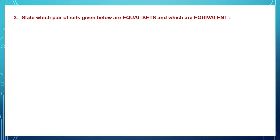Now, here: state which pair of sets given below are equal sets and equivalent sets. Equal sets are when you have the same members in two sets — if we have the same members in both sets, we call them equal sets. Equivalent sets are sets which have the same number of elements. The elements need not be the same, but the number should be the same. If I have five elements in one set, I must have five elements in the other set.